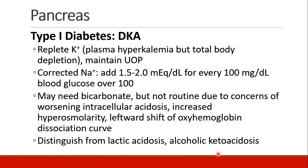We also need to replete the patient's potassium. These patients may present with hyperkalemia, but remember that their total body potassium stores may be quite depleted. They haven't had insulin, so they haven't been able to transport potassium into the cells. We should also maintain adequate urine output. When patients are very hyperglycemic, we need to correct sodium: for every 100 mg/dL of blood glucose over 100, we add 1.5 to 2 mEq/dL to their sodium.